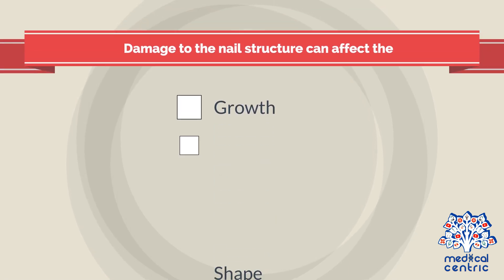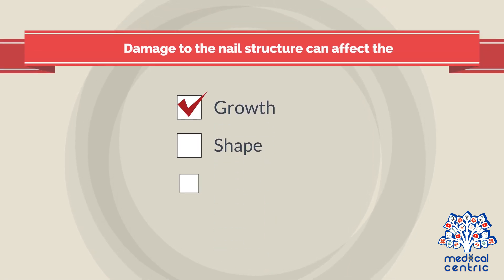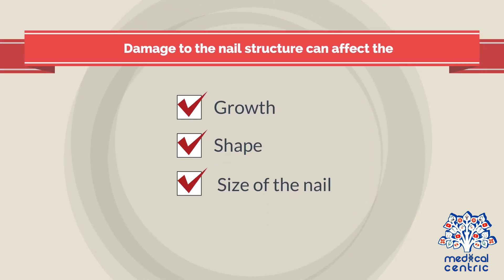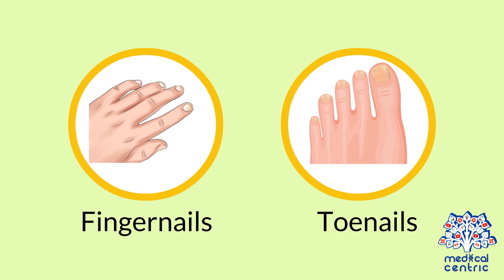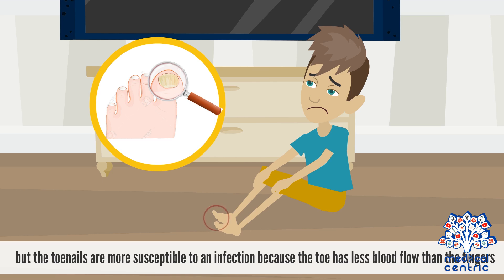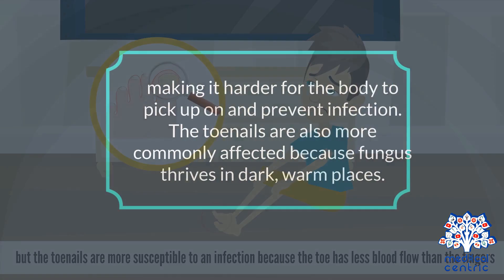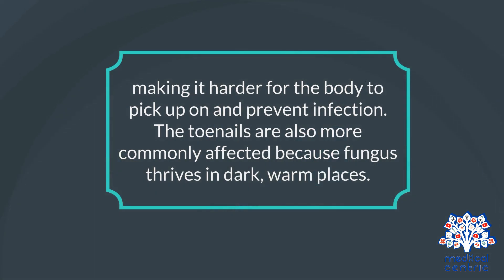Damage to the nail structure can affect the growth, shape, and size of the nail. Fungal nail infections can affect both the fingernails and the toenails, but the toenails are more susceptible because the toe has less blood flow than the fingers, making it harder for the body to pick up on and prevent infection. The toenails are also more commonly affected because fungus thrives in dark, warm places.